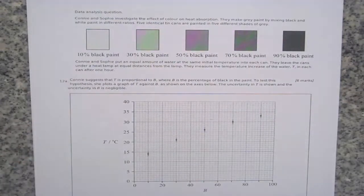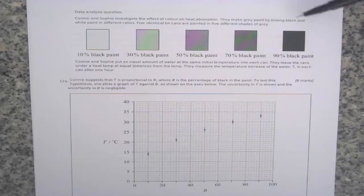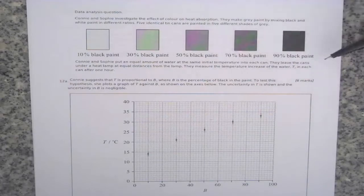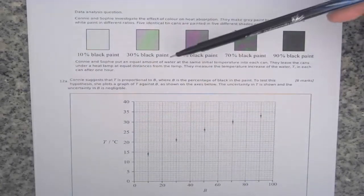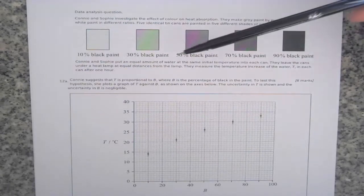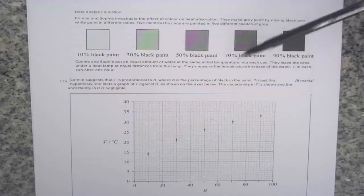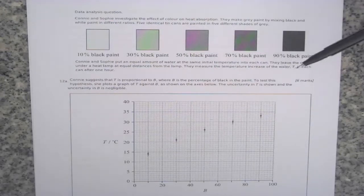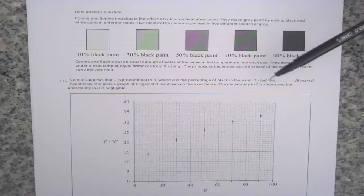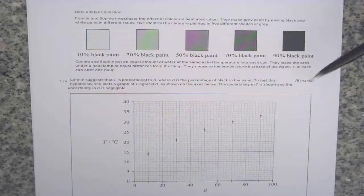The first question says that two students investigate the effect of color on heat absorption. They make grey paint by mixing black and white paint in different ratios. Five identical tin cans are painted five different shades of grey — you can see the percentage of black paint. They put an equal amount of water at the same initial temperature into each can, leave the cans under a heat lamp at equal distances, and measure the temperature increase after one hour. Connie suggests that T is proportional to B, where B is the percentage of black in the paint. To test this hypothesis, she plots a graph of T against B. The uncertainty in T is shown and the uncertainty in B is negligible.